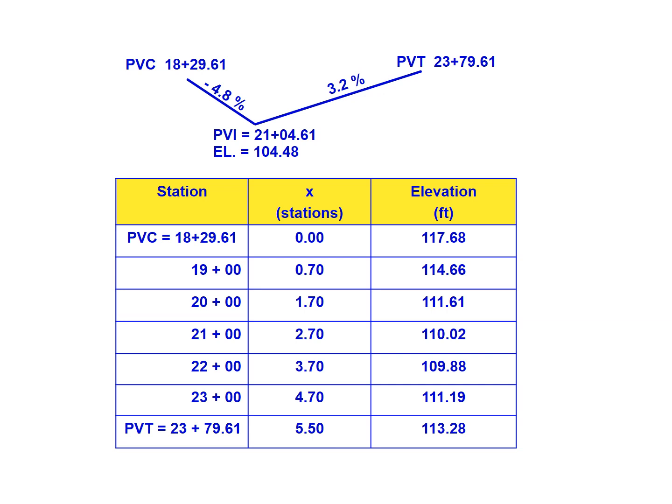For the elevation column, we plug each x value into our parabolic equation y equals ax squared plus bx plus c. We'll find the elevation for each of these points and see a general trend: since we've got a sag curve, the elevations at each end are higher and they drop in the middle. That's the pattern we should see when dealing with a sag vertical curve.